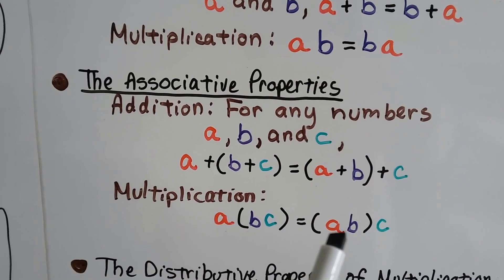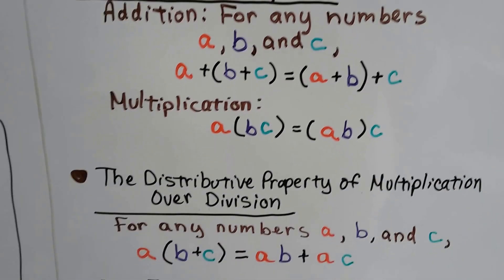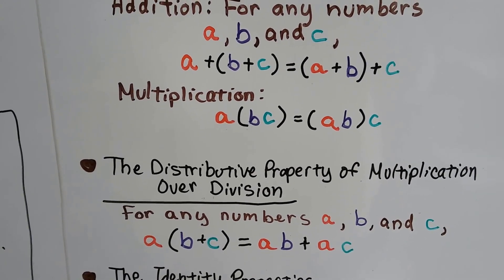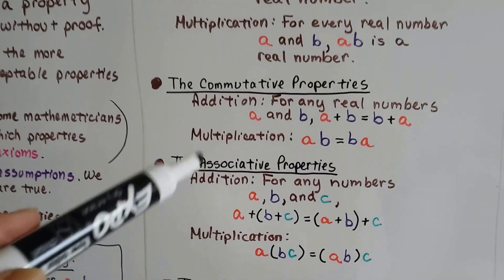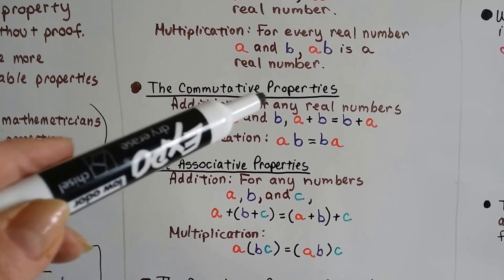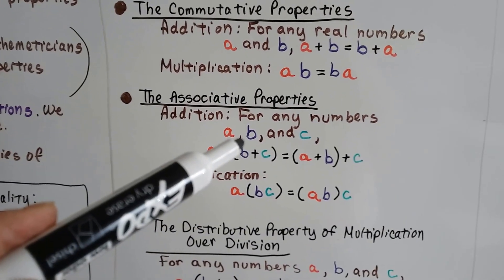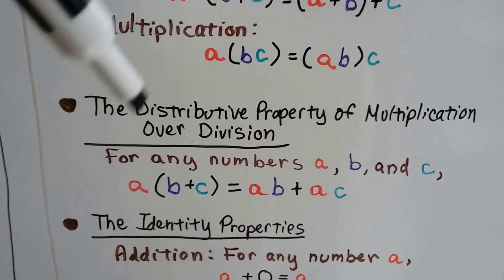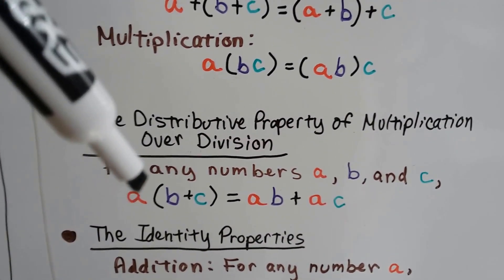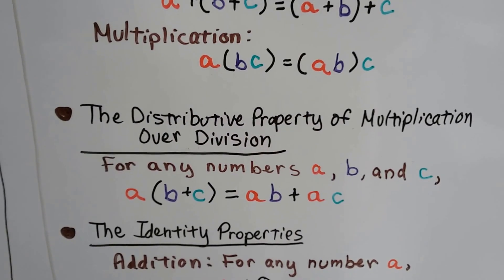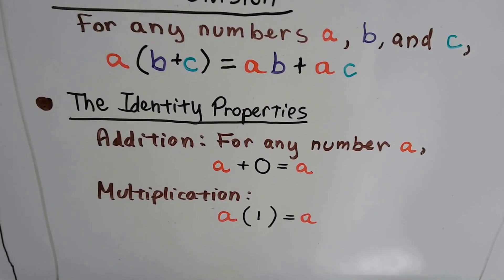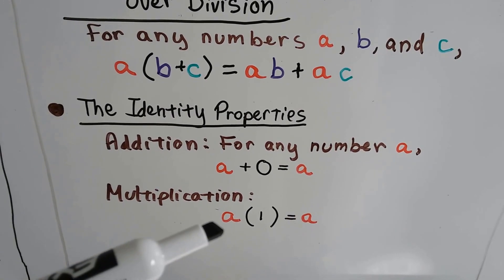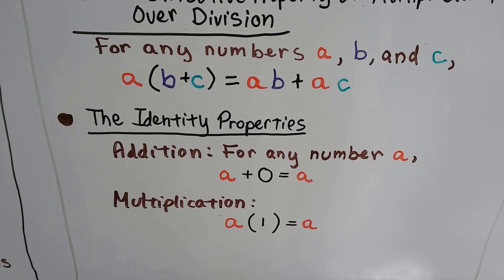And the distributive property of multiplication over division says for any numbers A, B, and C. Now, do you notice, up here it says for every real number, for every real number, and then all of a sudden, associative says for any number. So distributive says for any numbers A, B, and C, that we can distribute this A to the B and A to the C to get A times B plus A times C. And the identity properties for addition says that if we add a 0, A is going to stay the same and keep its identity. And if we multiply A times a 1, it's going to stay the same and keep its identity.